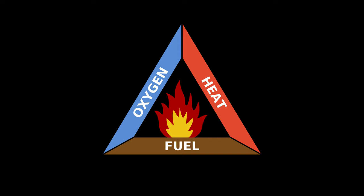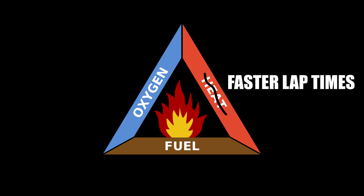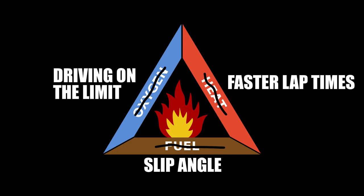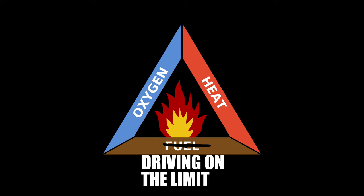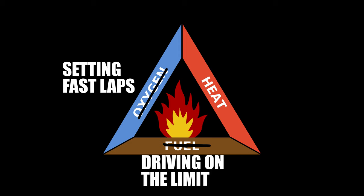So in sim racing or toge, what we want to produce is faster lap times — we'll replace the product 'heat' with faster lap times. Our fuel will be Slip Angle and our oxygen will be the limit of the car. Can you spot the issue? We can't produce Slip Angle without already being on the limit of grip and already producing faster lap times. Slip Angle is the product of driving on the limit and setting fast times. So let's fix this diagram: our fuel will be knowing the limit of our car, our oxygen will be setting fast times, and therefore our product will be Slip Angle.